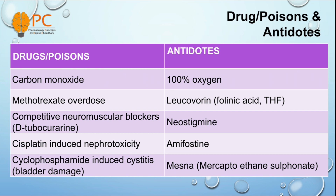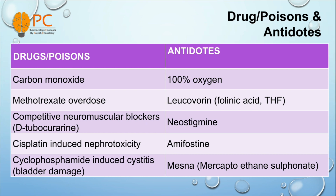And for d-tubocurarine overdose or competitive neuromuscular blocker overdose, we can use neostigmine as antidote. And for cisplatin-induced nephrotoxic effect, we can use amifostine as antidote. And for cyclophosphamide-induced cystitis or bladder damage, we can use mesna. Mesna means mercaptoethane sulfonate as antidote.